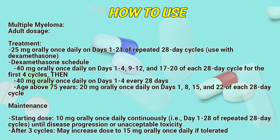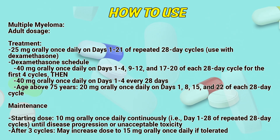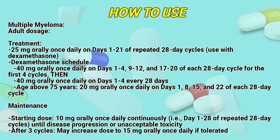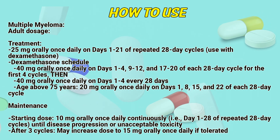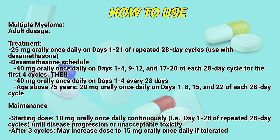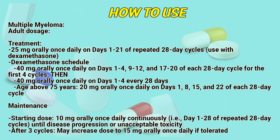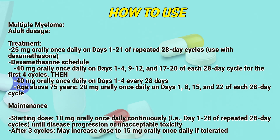Multiple myeloma, adult dosage: 25 mg orally once daily on days 1–21 of repeated 28-day cycles, used with dexamethasone. Dexamethasone schedule: 40 mg orally once daily on days 1–4, 9–12, and 17–20 of each 28-day cycle for the first 4 cycles. Then 40 mg orally once daily on days 1–4 every 28 days.